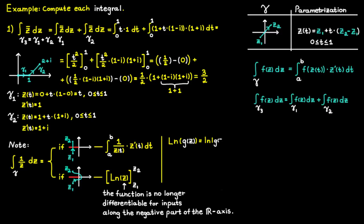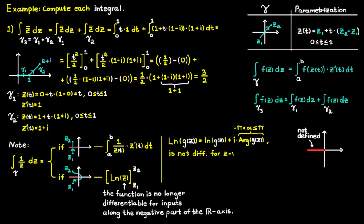We can see this by studying the definition of the function. The principal logarithm doesn't know how to handle numbers that have argument minus pi, meaning it is not defined for numbers on the negative real axis, and therefore cannot be differentiable there. More formally, the principal logarithm is not differentiable for c values such that the input function g lies in the set of c values on the negative real axis. The c values on this line have x between minus infinity and 0 with y equal to 0, which means this set also includes the point 0.